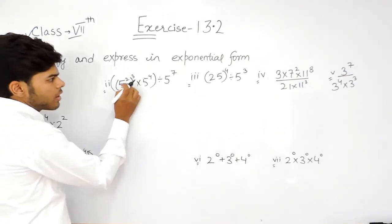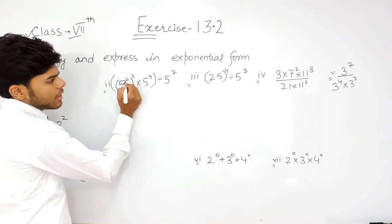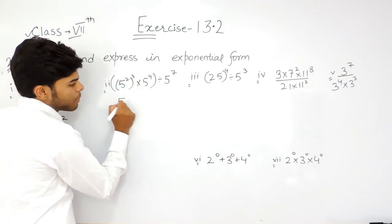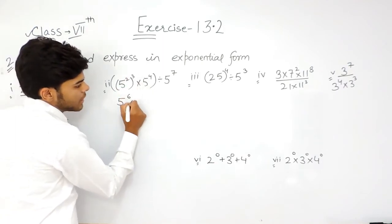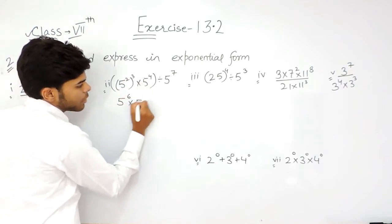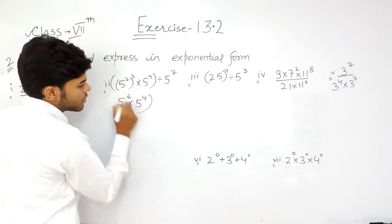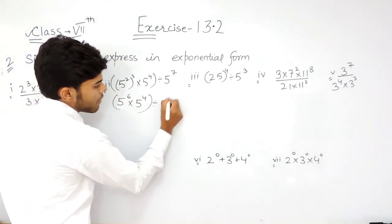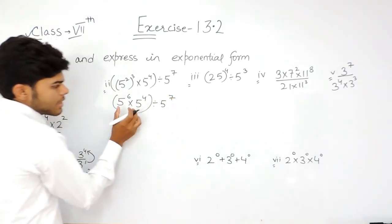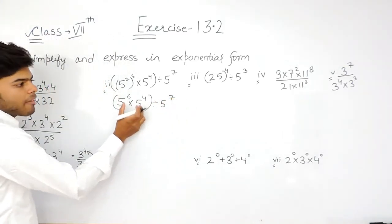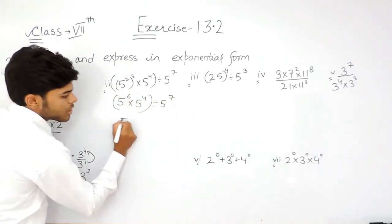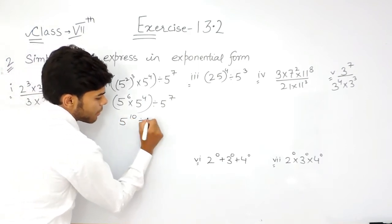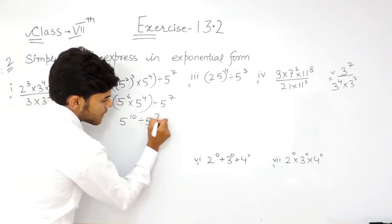Now this one — you know that this can be written as 5 to the power 6 multiplied by 5 to the power 4, whole divided by 5 to the power 7. Same base, power gets added up. So this becomes 5 to the power 10 divided by 5 to the power 7.